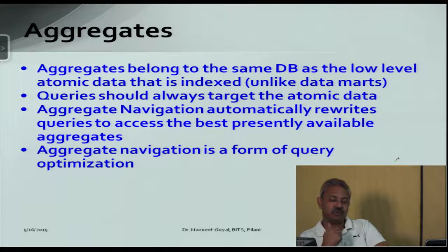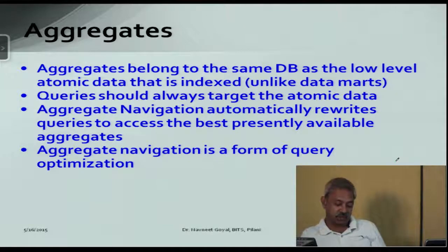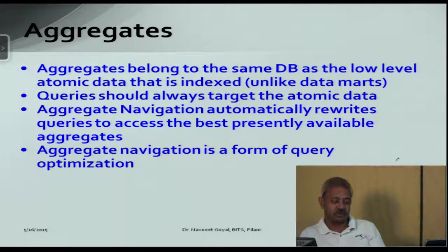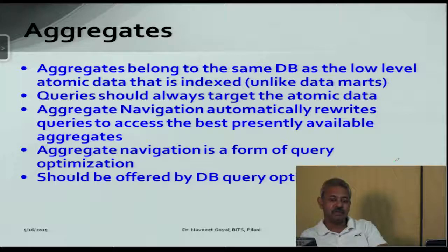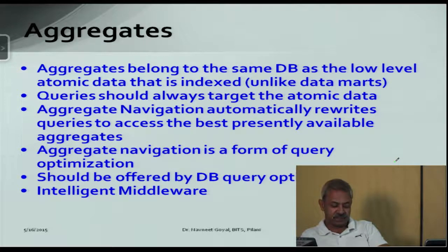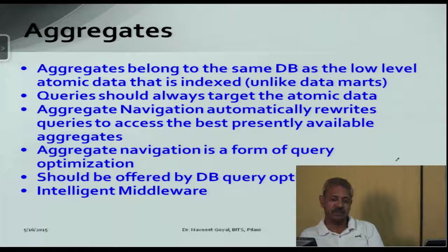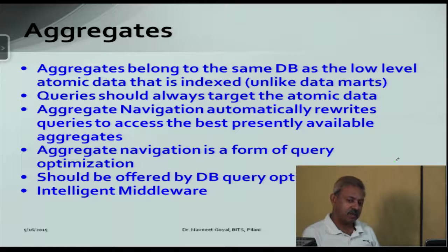Aggregate navigation is a form of query optimization. When queries are redirected to aggregates, they run faster by a factor of anywhere between 100 to 1,000. It is a kind of intelligent middleware that sits between the users and the data warehouse, intercepts any query issued by the user, makes the query aggregate-aware, and then the query is actually executed on top of the aggregates.